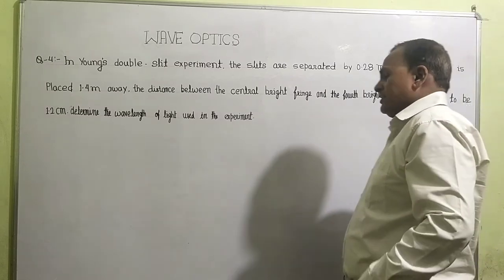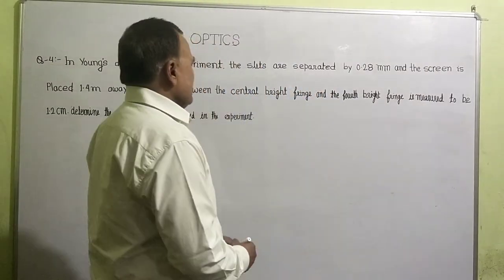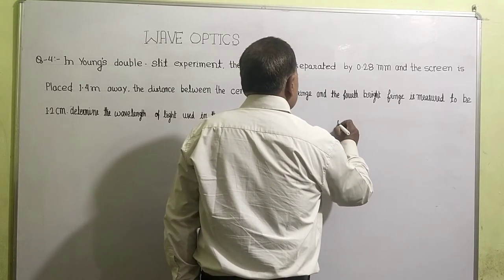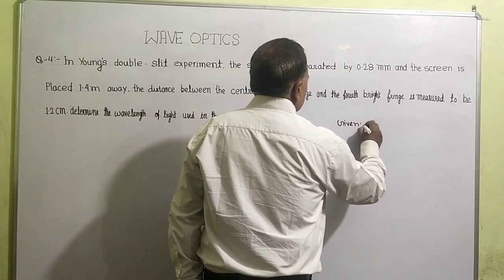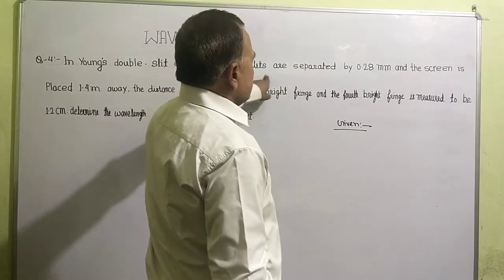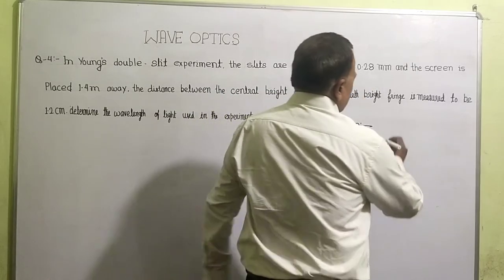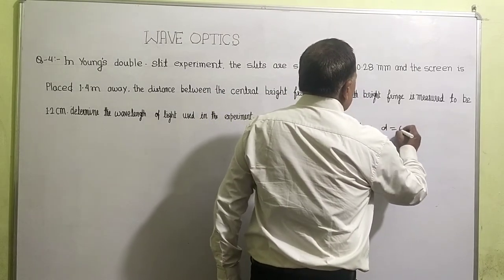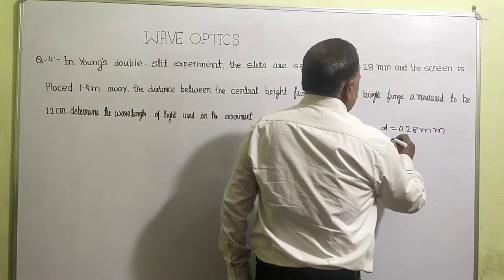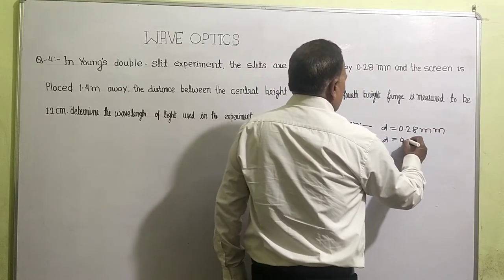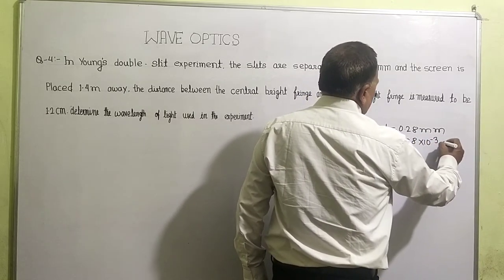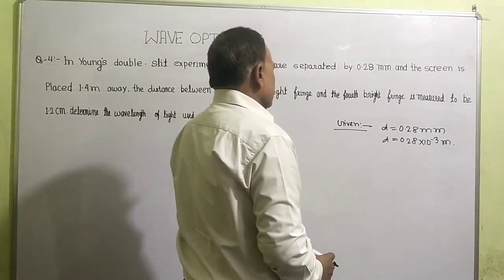First of all we have to see what is given. The given values in Young's double slit experiment: slit distance d is equal to 0.28 mm, that is d equals 0.28 × 10^-3 meter. So it is converted into meters firstly.